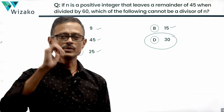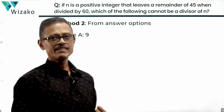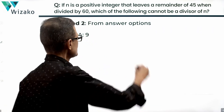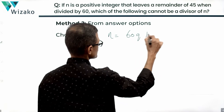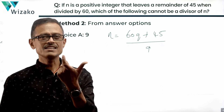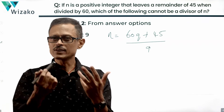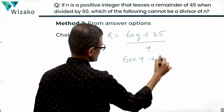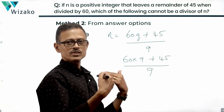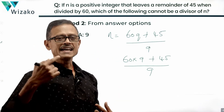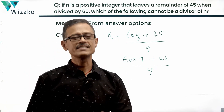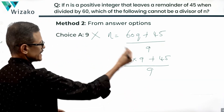What if this idea did not strike you? Let's run through each answer option. Starting with answer option A: the divisor is 9. Can n be divided by 9? Is there at least one case? We have n = 60q + 45. 45 is divisible by 9. If we pick q = 9, then 60 × 9 is divisible by 9, and 45 is also divisible by 9, so this number is divisible by 9. This is a possible value for n. Therefore, 9 can possibly divide n, so it's not the answer.